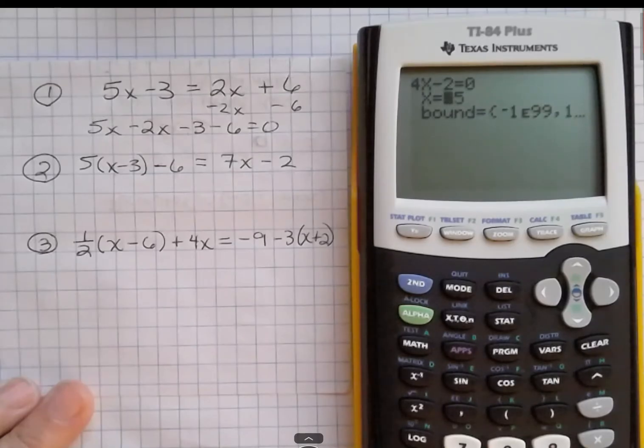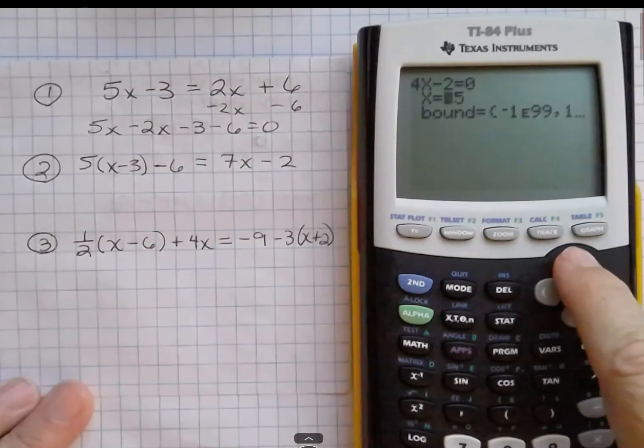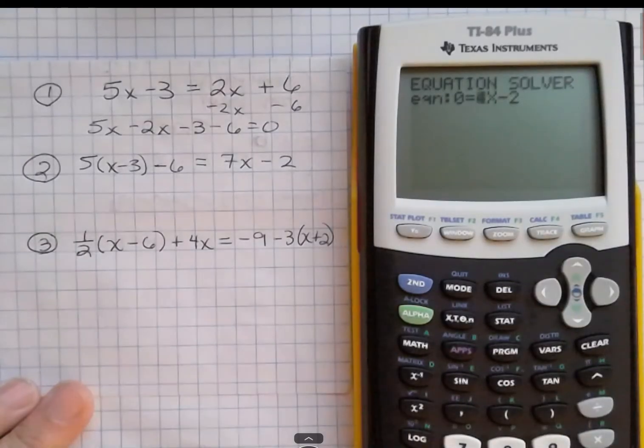Now I have an old equation in there and an old answer, so what I'm going to do is use my up arrow to go up, and I can hit clear, and now I can start to enter my answer.